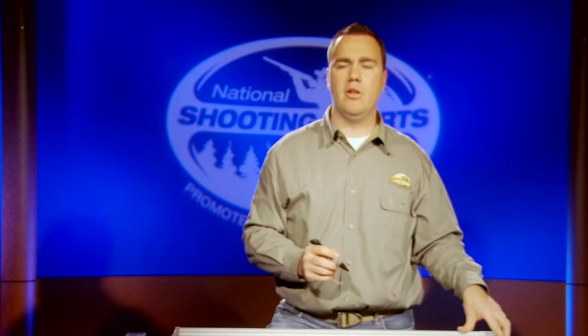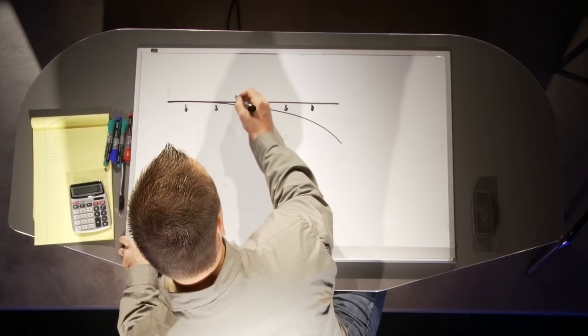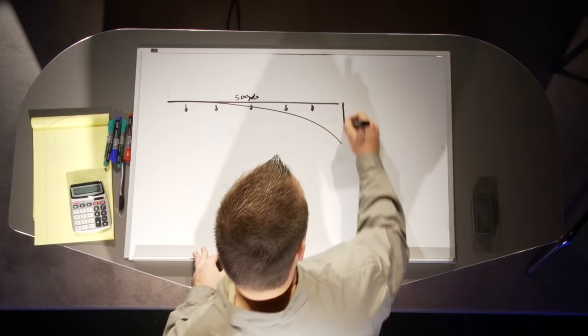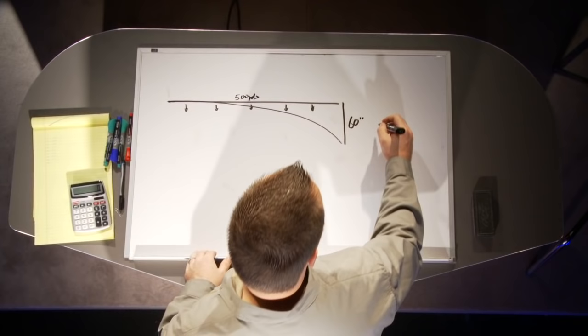If we shot along this original path, the bullet's going to fall further and further away from that original path. If this was 500 yards, I know for my rifle it's going to fall about 60 inches, which is why I adjust up 12 minutes of angle on my scope to compensate for that drop.